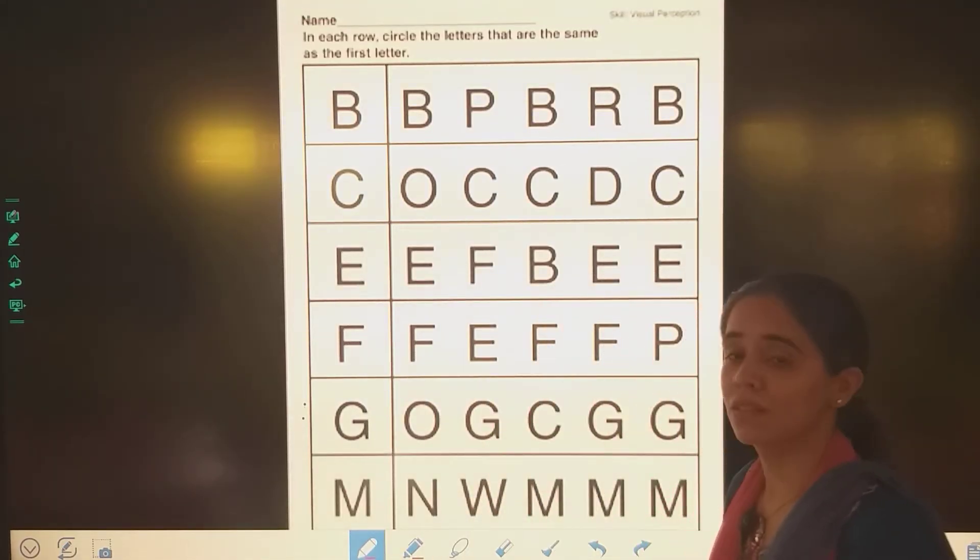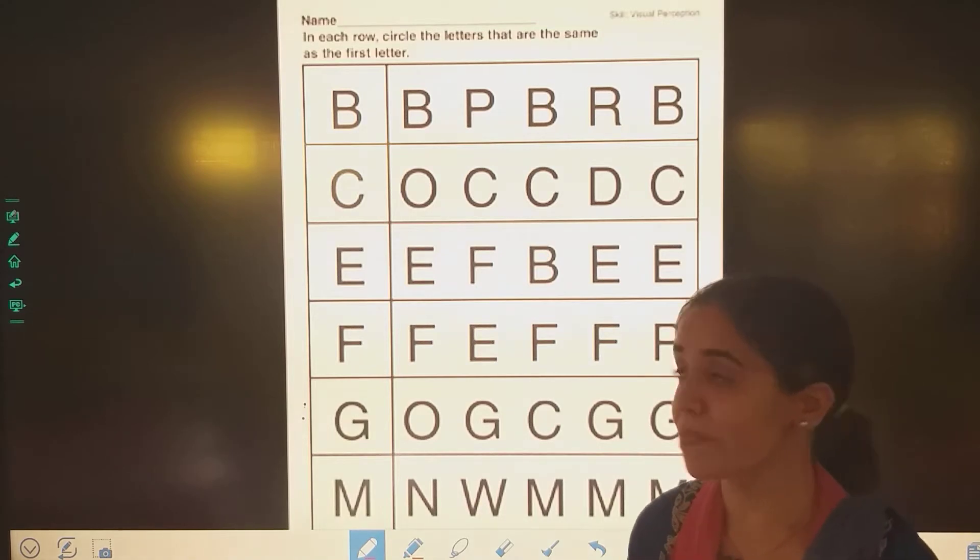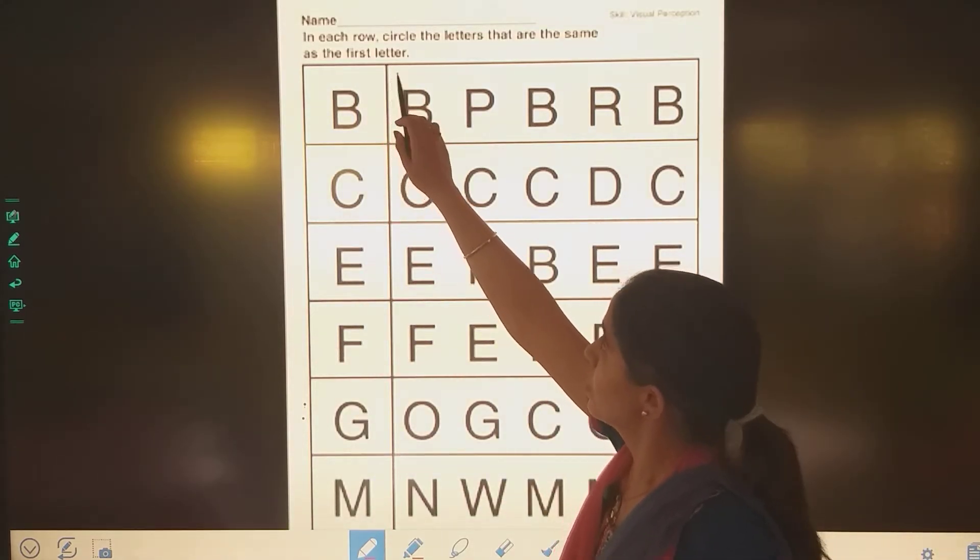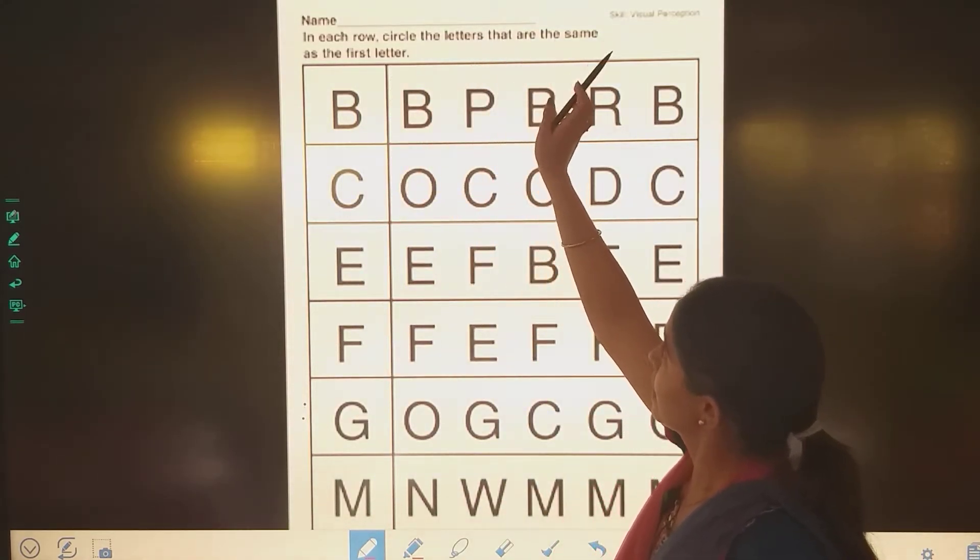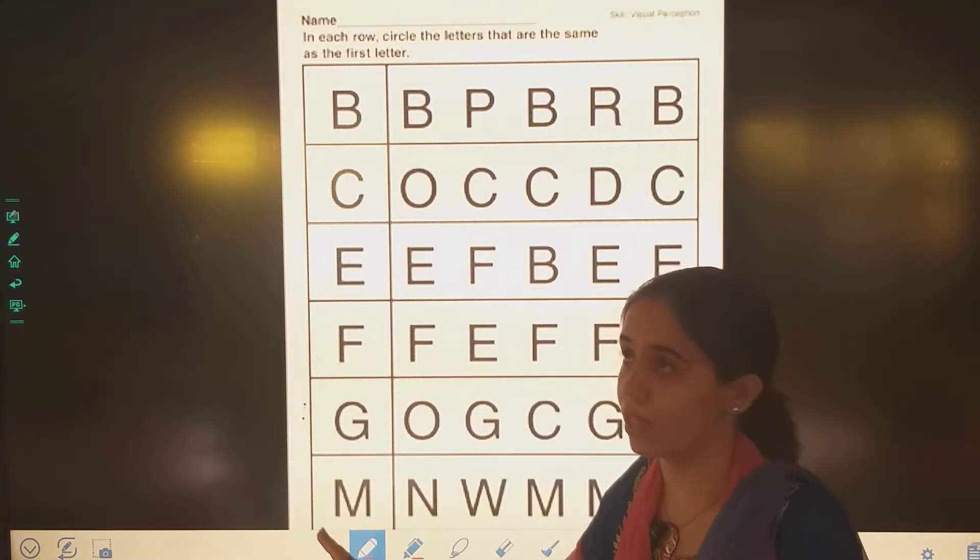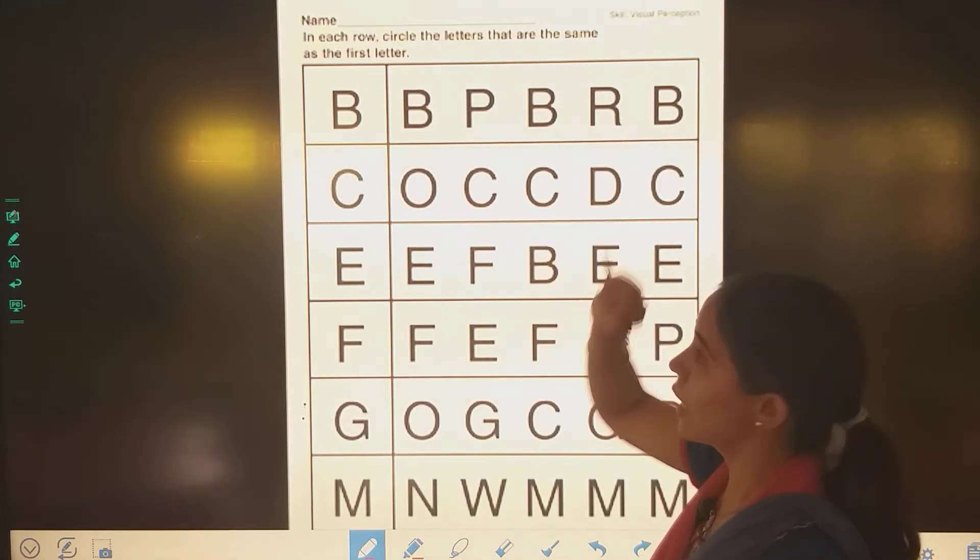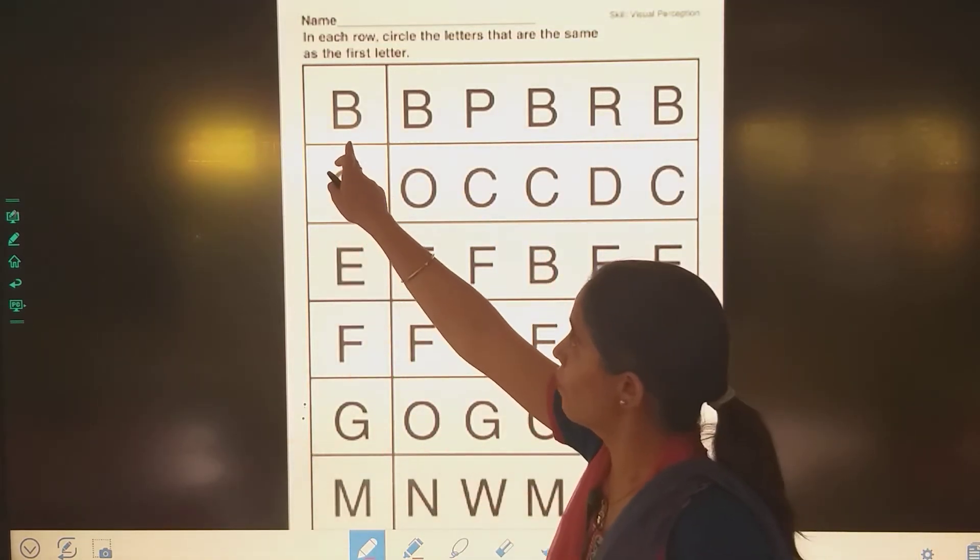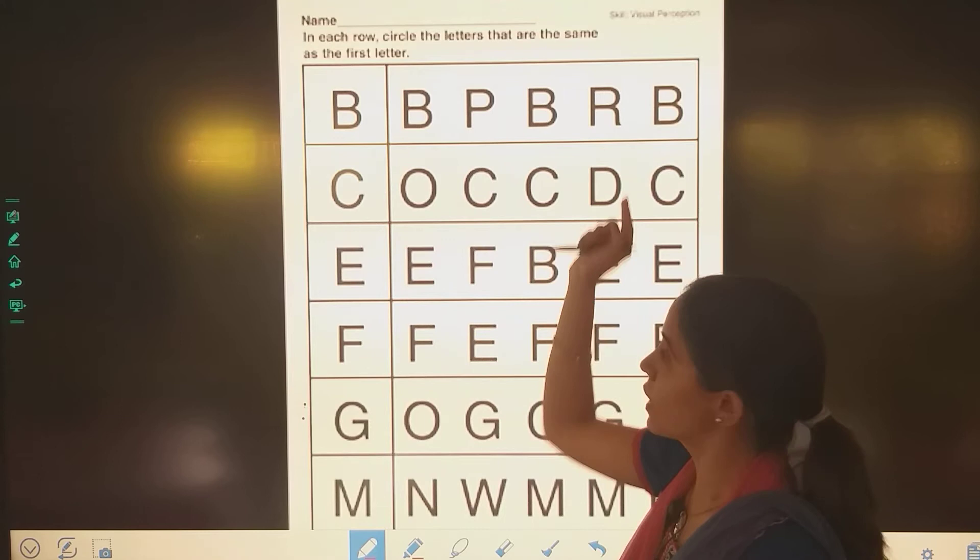So look at the image. What do you understand, children? In each row, circle the same letter that are same as the first letter. Here are all alphabets and here are different alphabets. The alphabet here, you have to circle the same letter.